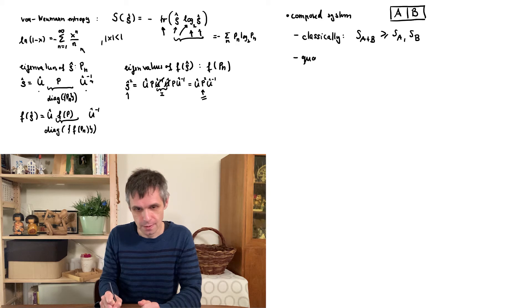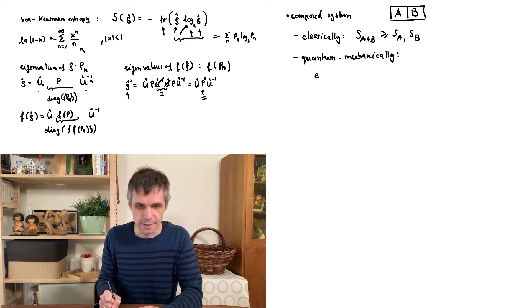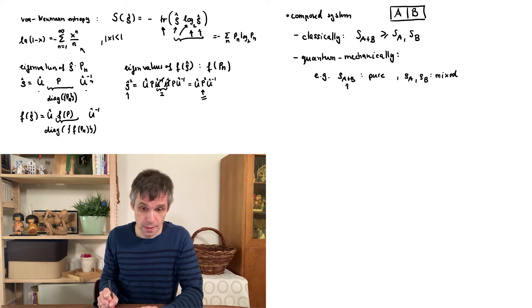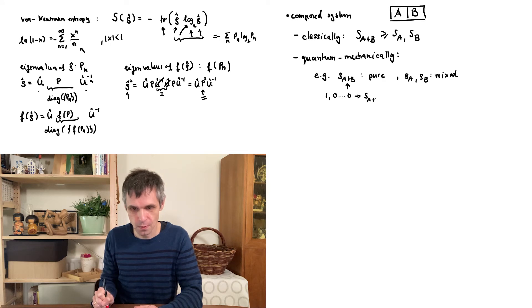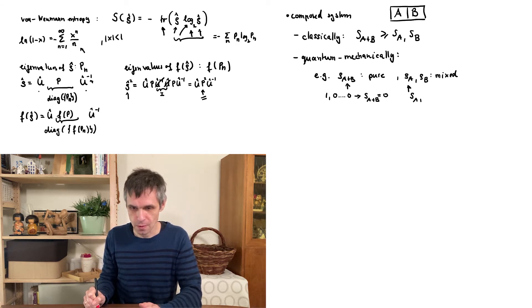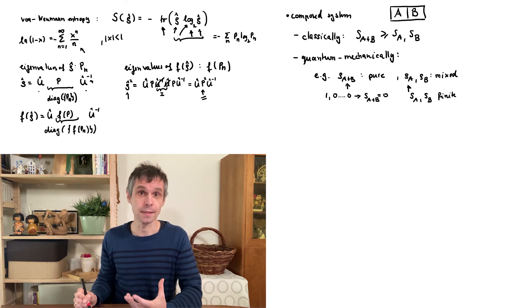However, quantum mechanically, this does not need to be the case. For instance, we can consider a composed system that is in a pure state, but with two parts that are entangled so that the reduced density matrices are both mixed. Well, the density matrix of a pure system has one eigenvalue, which is 1, and all the other eigenvalues vanish. And in that case, the von Neumann entropy of this composed system also vanishes. So there is no randomness in this system. However, the eigenvalues of these mixed density matrices will be numbers between 0 and 1, and then the entropies of these two subsystems are finite. And this is simply another way in which we can see that entangled quantum systems share information in a non-trivial way that cannot be replicated by classical systems.